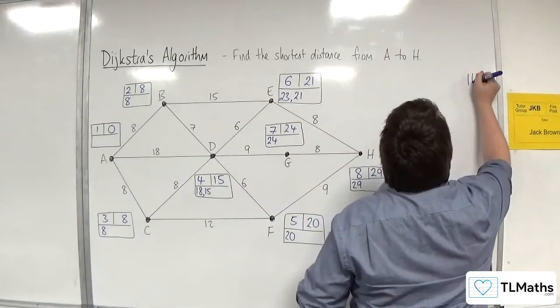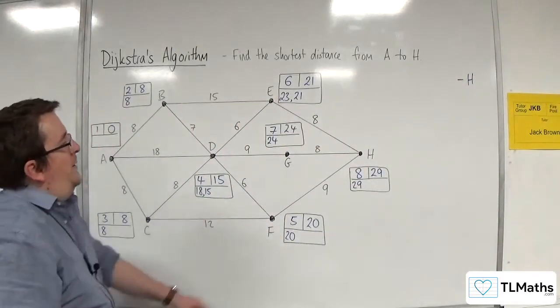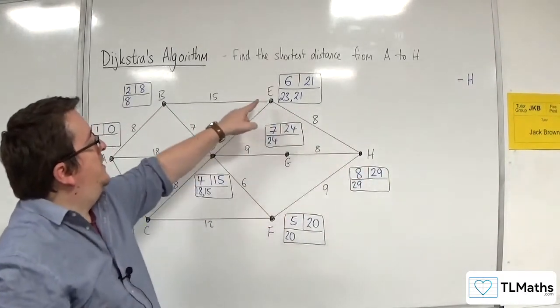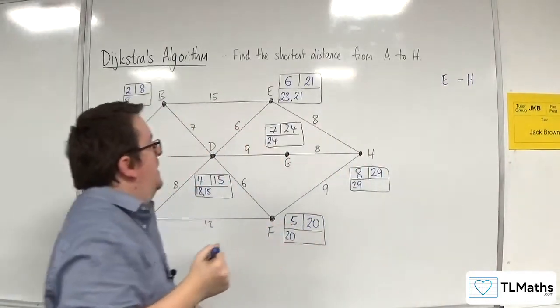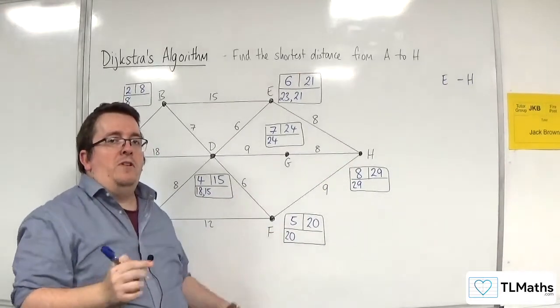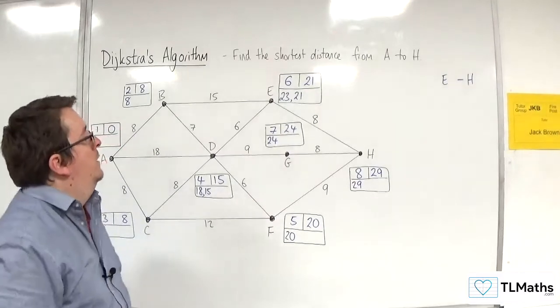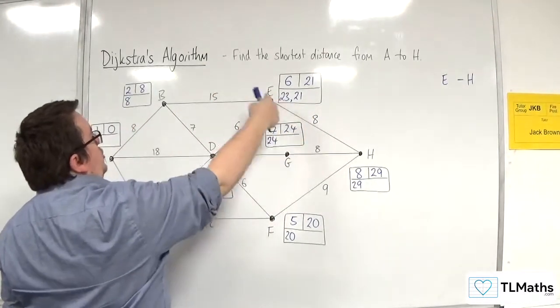So let's start from H, so we work backwards. Now 29 take away 8 is 21, so back to E will work. Now I do know also that 29 take away 9 is 20, so there are actually two routes through. So let's deal with this one first.